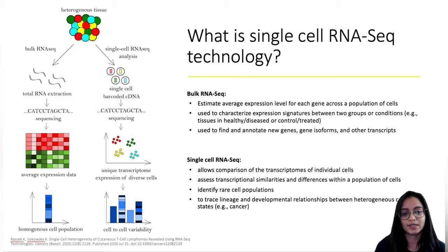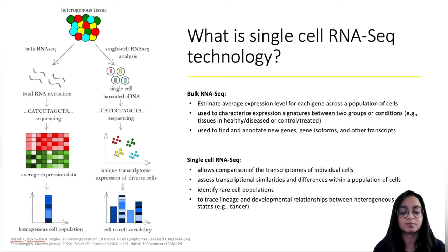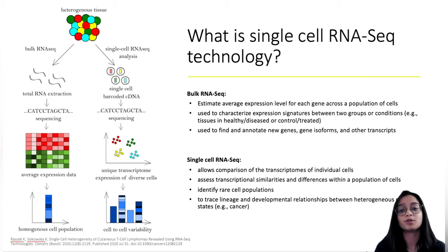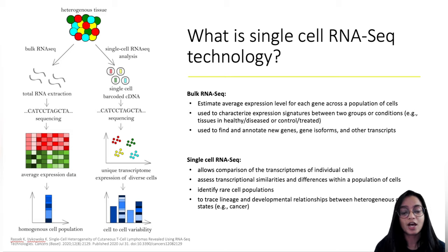In bulk RNA sequencing, we extract RNA from each cell and what we get is the average gene expression across all the cells. This makes it impossible for us to compare differences in gene expression between the cells, and this would not be the right model to apply to understand a heterogeneous system.